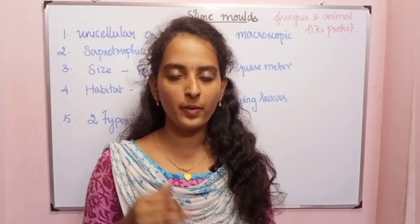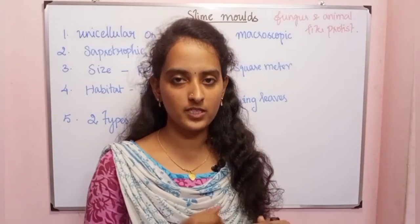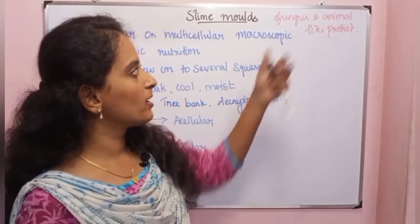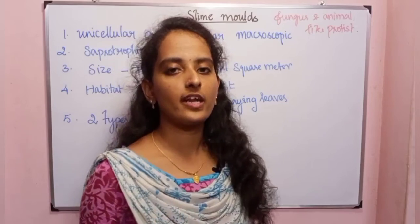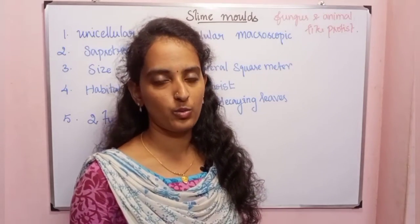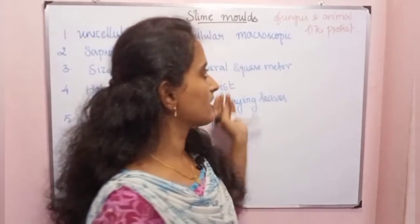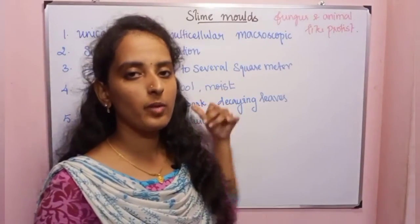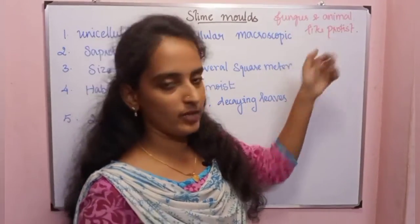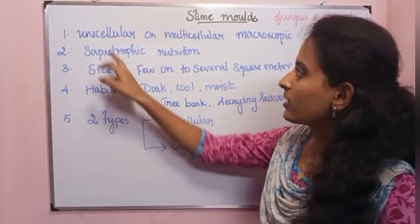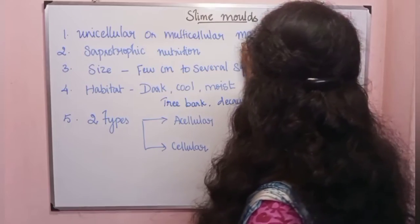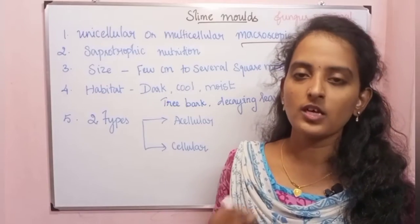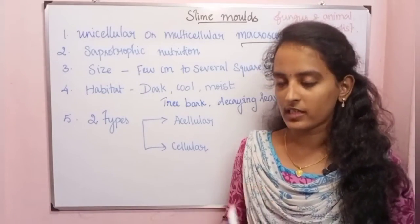Slime molds are non-photosynthetic protists. They are fungi and animal-like protists. Fungi are made up of chitin and use saprotrophic nutrition. Slime molds share both fungal and animal-like protist characteristics.